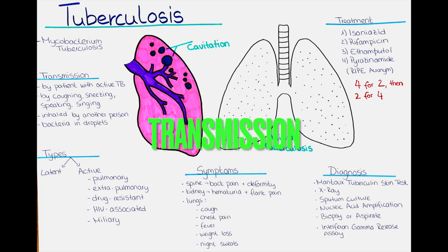How is tuberculosis transmitted? Tuberculosis is primarily spread through the air when a person with active TB in their lungs or throat coughs, sneezes, speaks or sings, releasing tiny droplets containing the TB bacteria — so Mycobacterium tuberculosis — into the air. These droplets can then be inhaled by another person who may become infected.